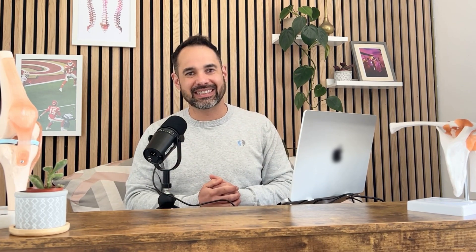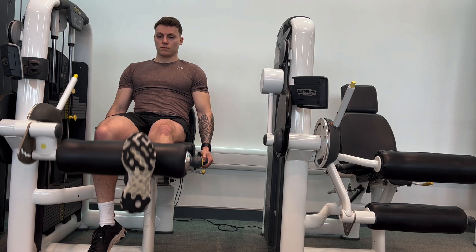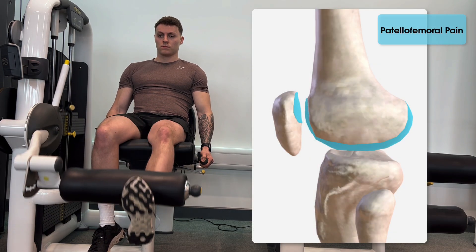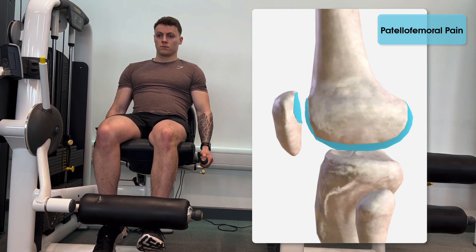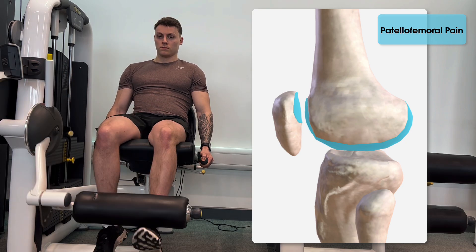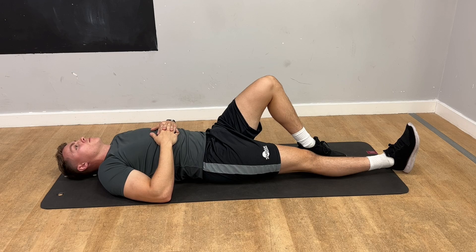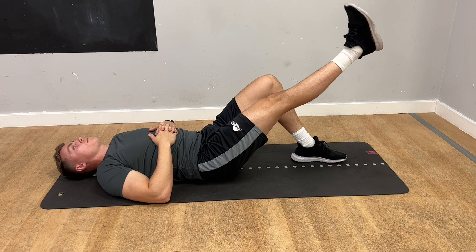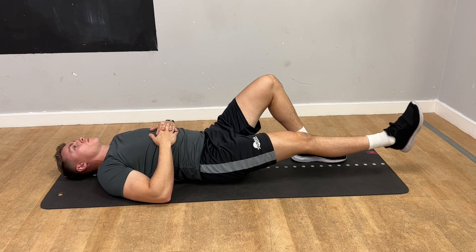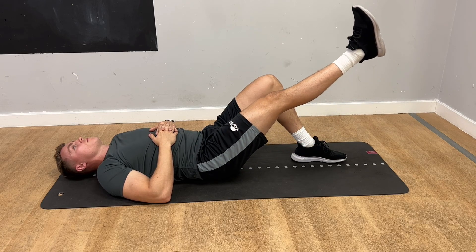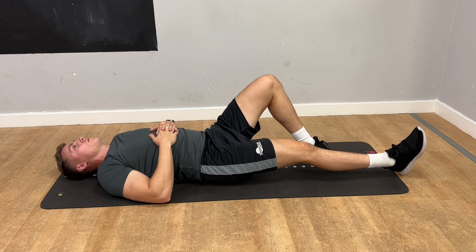There are loads of different exercises we can use for quadriceps strengthening. Starting with open chain exercises like leg extensions — excellent for both patellofemoral pain and patella tendinopathy. With patellofemoral pain in particular, you may focus on the terminal range of movement, from around 60 degrees of flexion to zero degrees extension, as this is the range in which patellofemoral pain can be irritated. A straight leg raise is also great, particularly in early rehab, for strengthening the quadriceps and especially the rectus femoris because of the hip flexion component. This exercise is easy for patients to replicate anywhere in a manageable way.